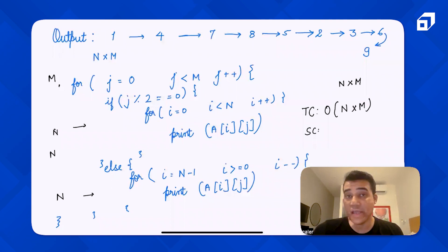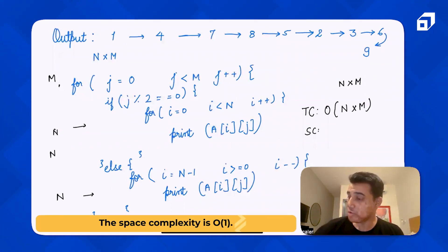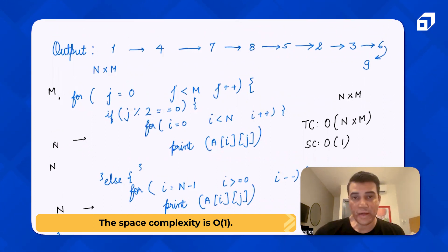The space complexity, on the other hand, since we have not taken any extra array, the space complexity is going to be O(1).